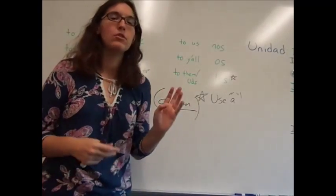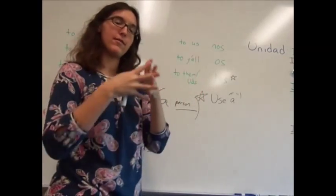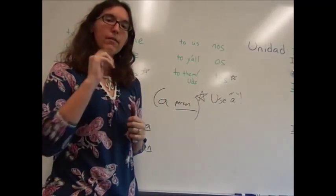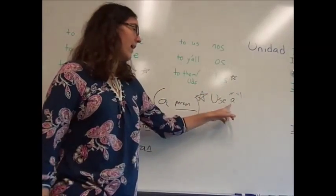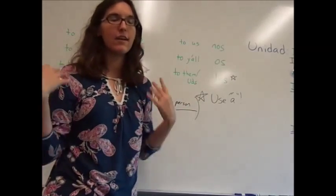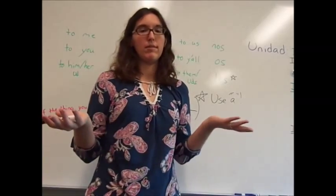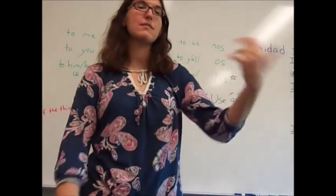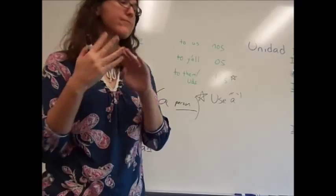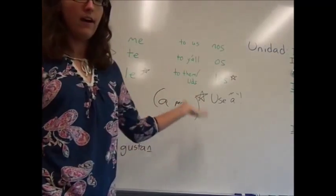And then we have to them, which is, it could be a group of girls, it could be a group of boys, it could be a group of boys and girls together. It doesn't matter. We use les. But remember, we need that A, the personal A, for clarification. If I just said, oh yeah, painting is pleasing to them, we don't know who I'm talking about. But if I said, painting is pleasing to Susie, Rebecca, and Maria, I'm clarifying and using an A.